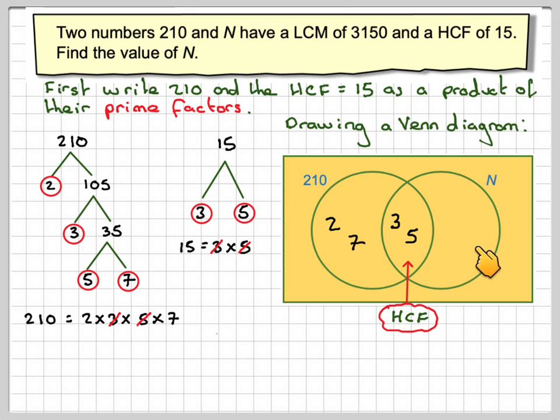And then we will need to know what to put here. That's what we've got to find out. We'll let that bit be X. And then three times five times X will make my number N. So we know that the LCM is two times seven. So we do two times seven times three times five times whatever's in here makes the LCM.